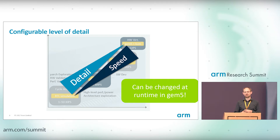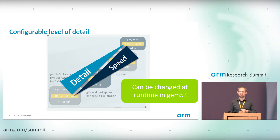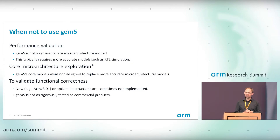There are plenty of cases where you don't want to use gem5. If you're designing a chip and want to do performance validation, gem5 isn't the tool for you — at least not without a more accurate microarchitecture model in the back end. For core microarchitecture there are lots of caveats. You could potentially use gem5 to evaluate branch predictors, but you probably don't want to use gem5 to look at things like physical register file sizing — in that case you want RTL simulation.